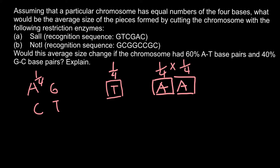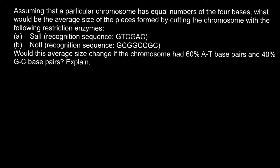With four different bases available for each position, the probability of finding the sequence adenine-adenine across two positions would be 1 out of 16. Now let's return to our question — we have two recognition sequences to analyze.